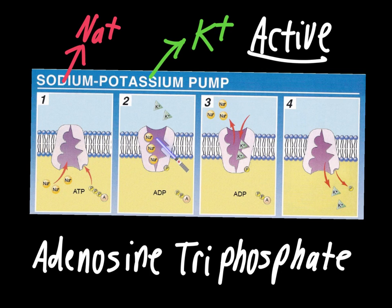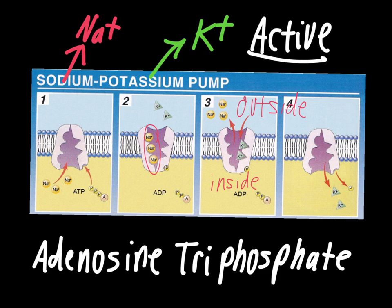The thing this first image is missing is labels for the inside and outside of the cell. The outside of the cell is on one side, and the inside of the cell is on the other. This means that sodium is being moved towards the outside, and potassium is being moved towards the inside. The cell is getting rid of sodium through the sodium-potassium pump and moving potassium into the inside. We'll look at a second image that shows this with more detail.